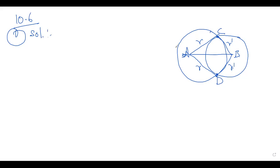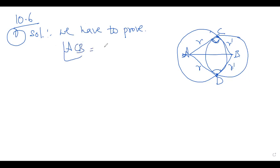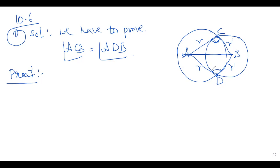Take the two triangles: triangle ABC and triangle ABD. We are going to prove they are congruent triangles. If we prove they are congruent, we can write directly angle ACB equals angle ADB by CPCT.